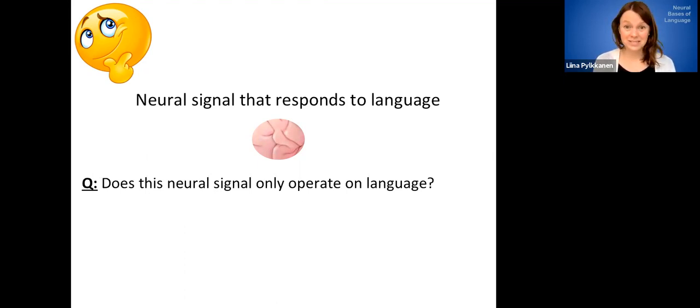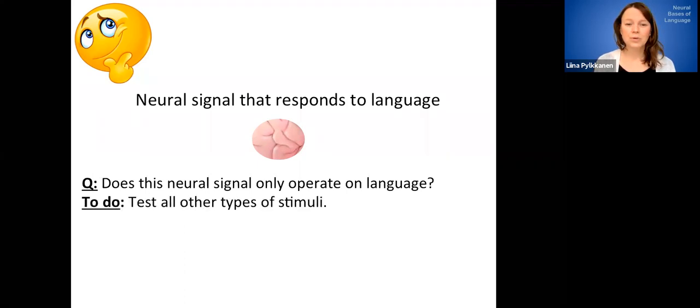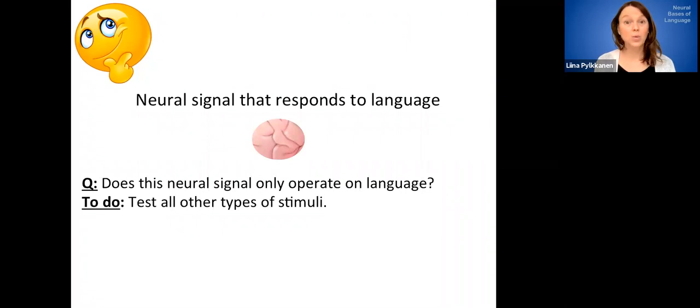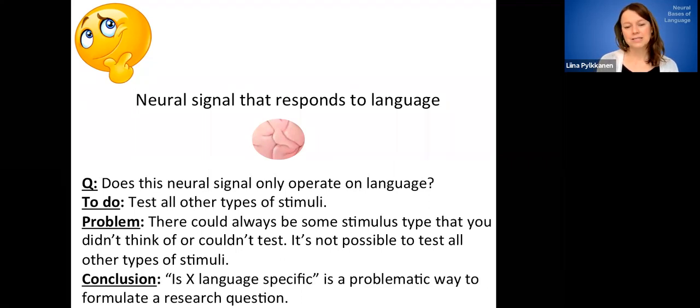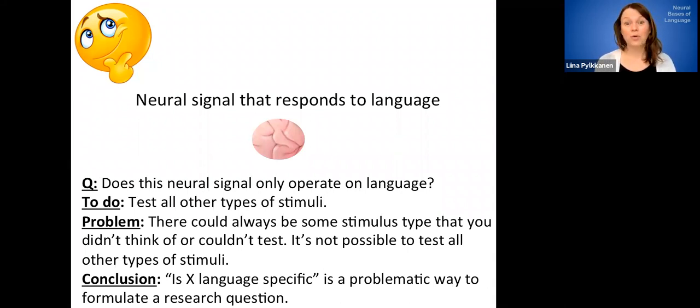So what would you do to study that? Well, you would need to test all other types of stimuli in order to establish that the neural signal only operates on language. So that's what you would need to do in order to demonstrate domain specificity. But of course, that's really problematic. So there could always be some stimulus type that you didn't think of or couldn't access. So it's actually not possible to test all other types of stimuli. So this kind of tells us that this question is a particular neural signal language specific. It's a problematic way to formulate a research question.